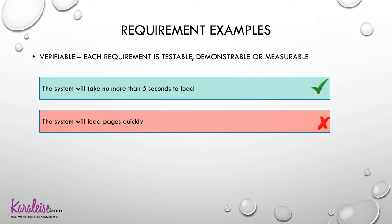Requirements must be verifiable — testable, demonstrable, and measurable. Good example: 'The system will take no more than five seconds to load' — that is very testable. Bad example: 'The system will load pages quickly' — 'quickly' is open to interpretation and not measurable. Avoid vague words like 'quickly,' 'often,' or 'soon' in your requirements, as they can't be objectively verified.